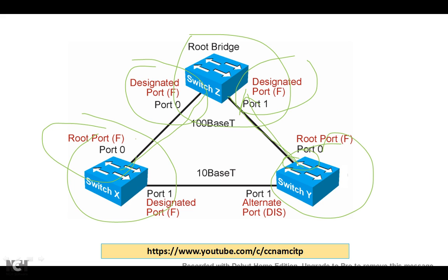Cost refers to the shortest distance between the root bridge and the source bridge — from where you want to reach the root bridge. For the X switch and Y switch, we have one designated port, but in this network one port will remain as an alternate port or backup port.